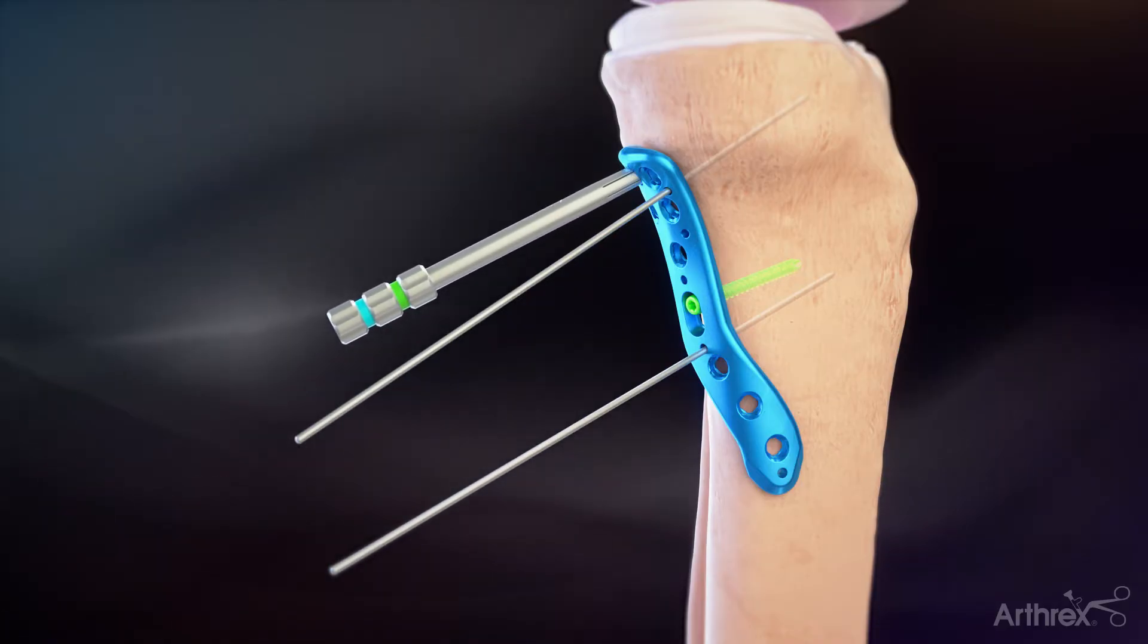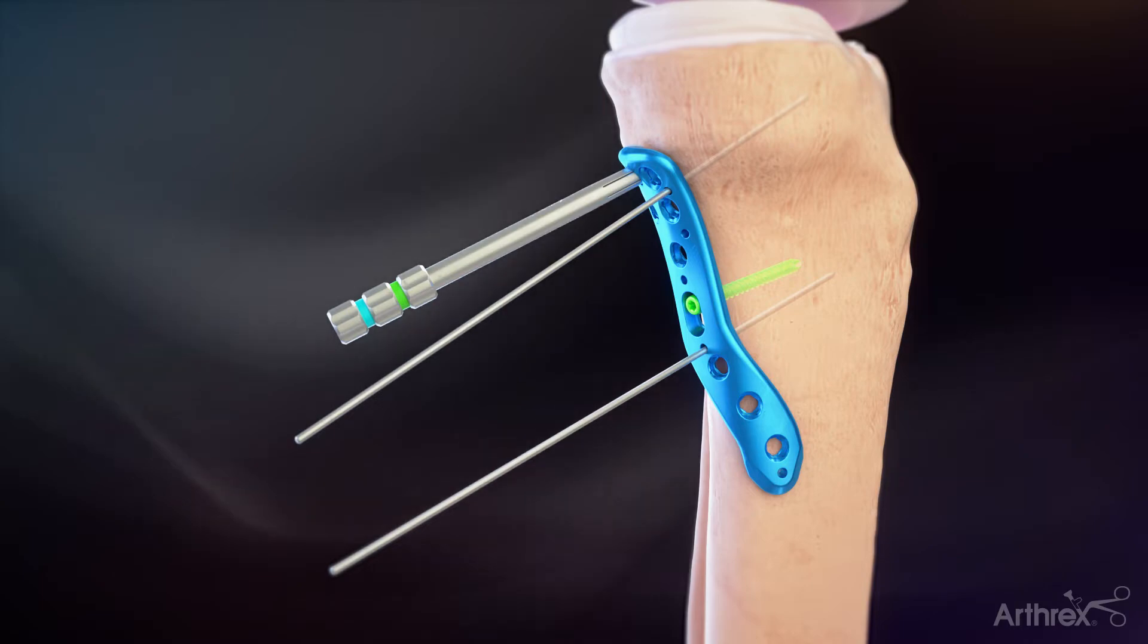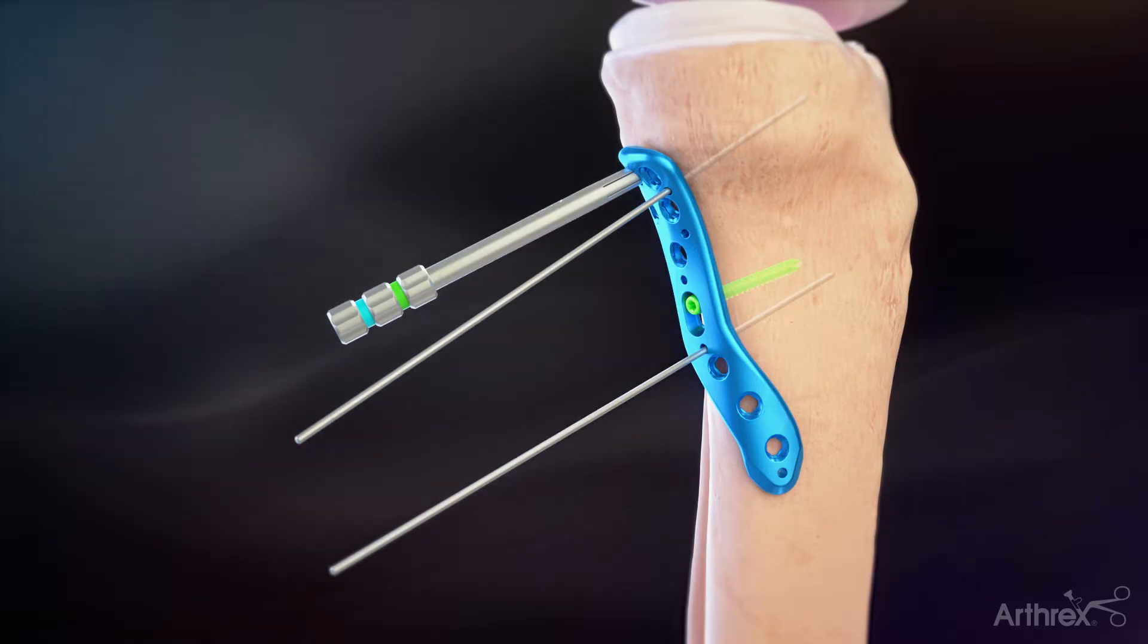The 2.8 mm fixed angle snap and drill guide can be used for the 4.0 mm fixed angle locking screws, 3.5 mm cortical screws, or 3.5 mm variable angle locking screws when drilling at the nominal angle.